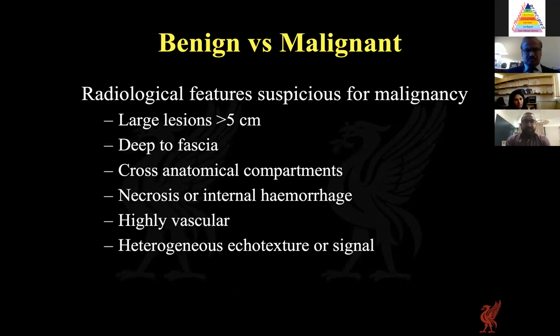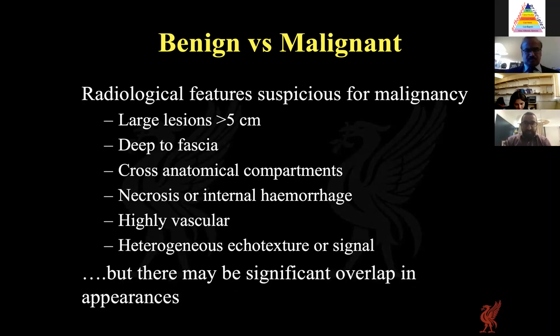Overall, when imaging a lesion, we need to determine whether it is benign, malignant, or indeterminate. Features suspicious for malignancy include large size, depth to fascia, crossing anatomical compartments, heterogeneity with necrosis or internal haemorrhage, and high vascularity. However, there is significant overlap, as some benign processes such as infection can also have one or more of these features — so bear that in mind when evaluating lesions.